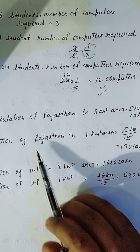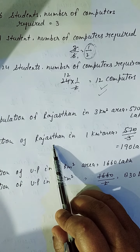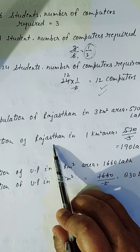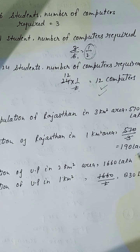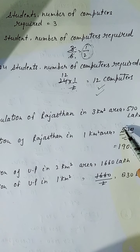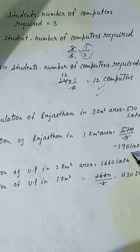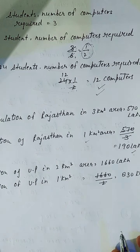So, population of Rajasthan, 1 km same way. Aap ko zyada ka dekhein, ek ka pooch raha hai. So, hamein kya karenghe? Divide karenghe. So, 570 divided by 3, hamein se karenghe. 3 into 1 is 3, 390, 270, 190 lakh aa jayegi 1 km area ki.